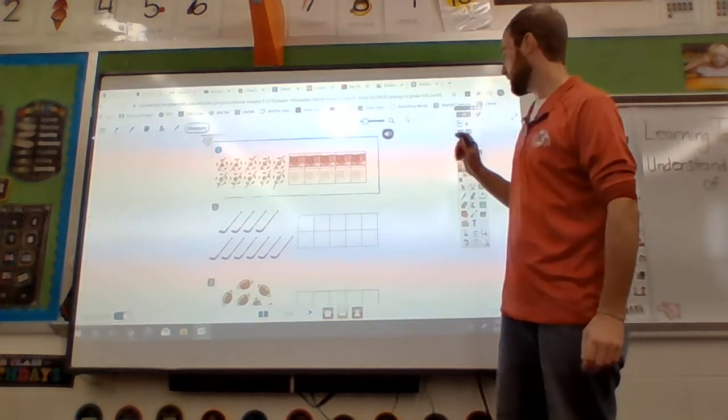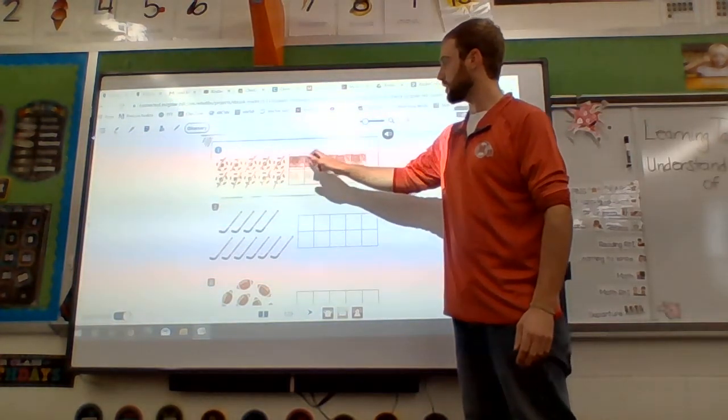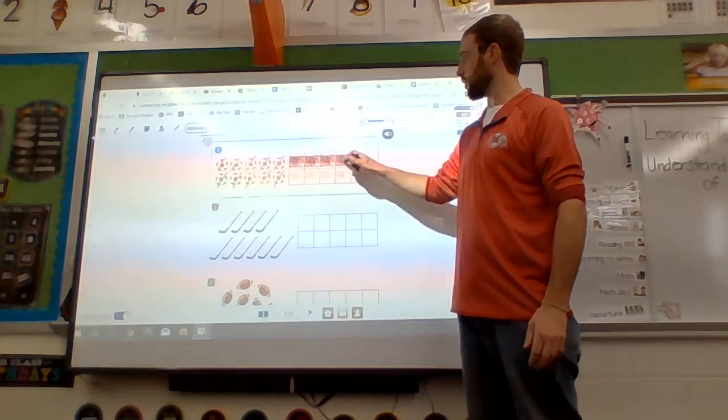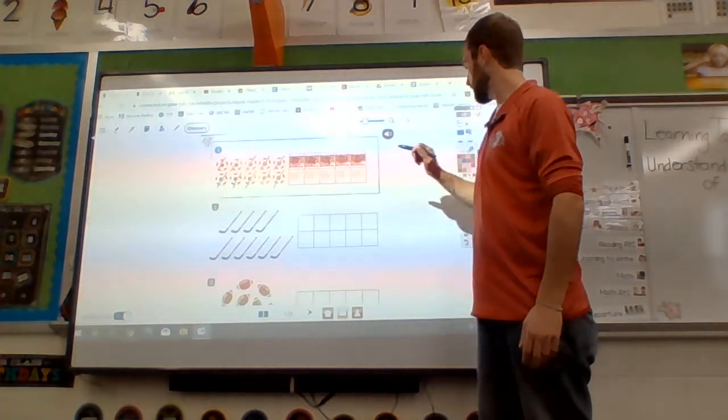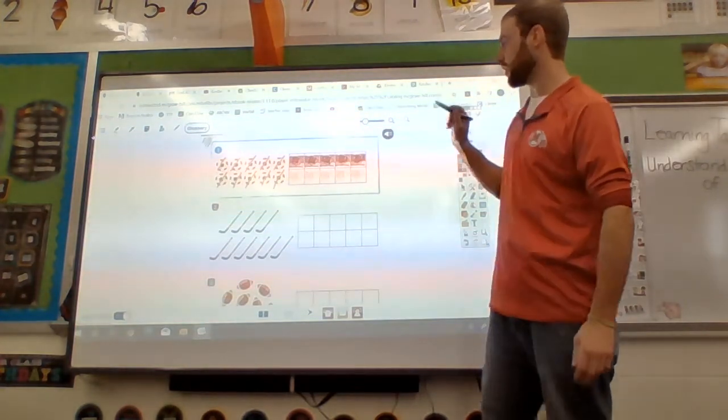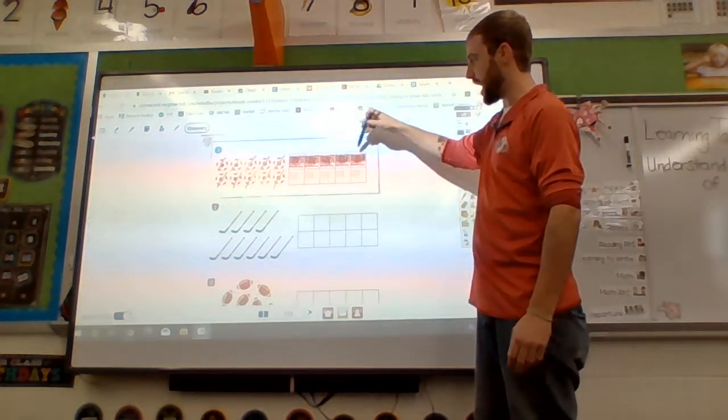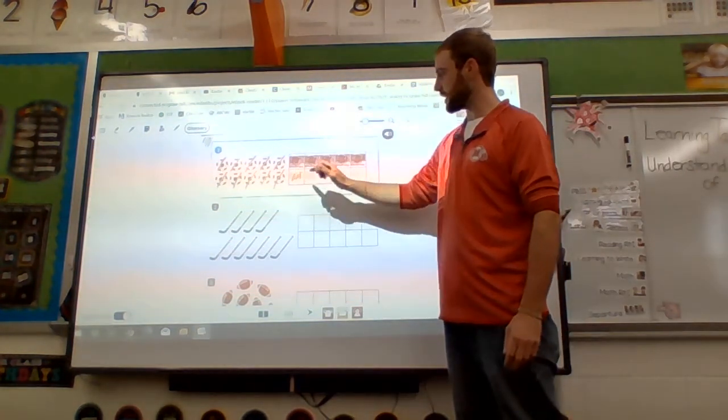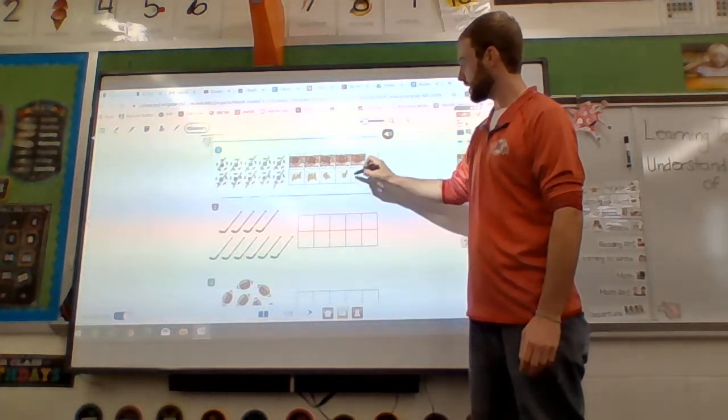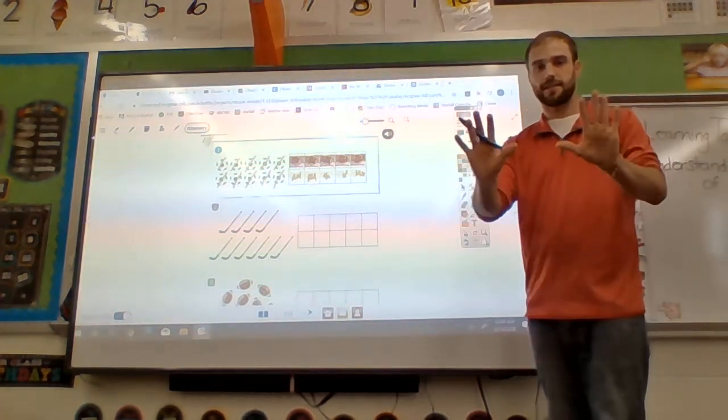Let's start with red. We're going to draw 5 red boxes. 1, 2, 3, 4, 5. Is that 10? No. Switch to yellow, and we're going to count on. We have 5 red. So 5, 6, 7, 8, 9, 10. How many? 10.